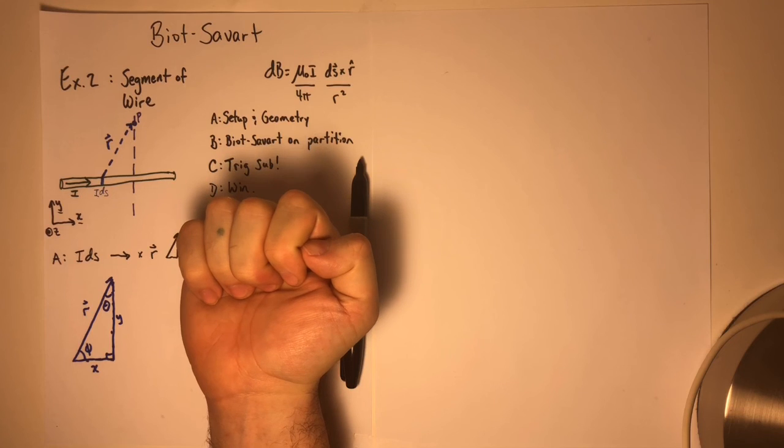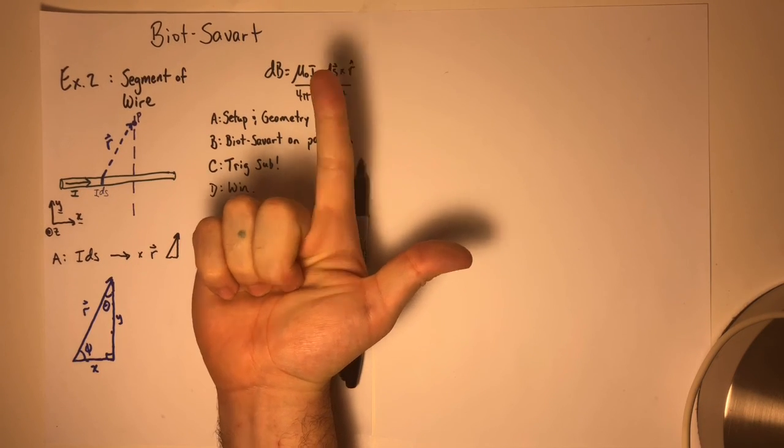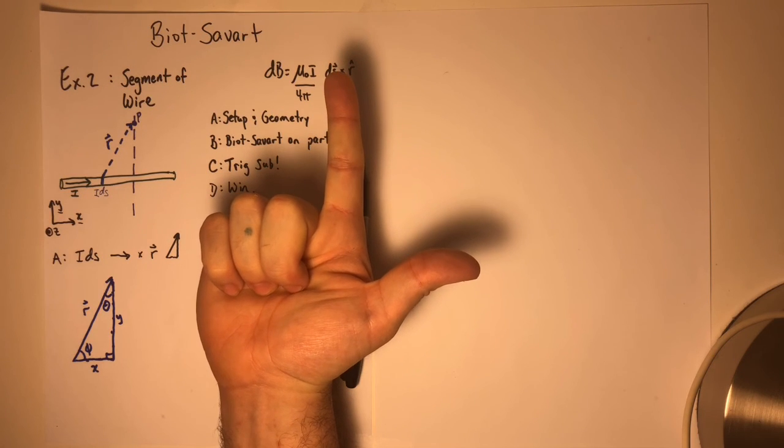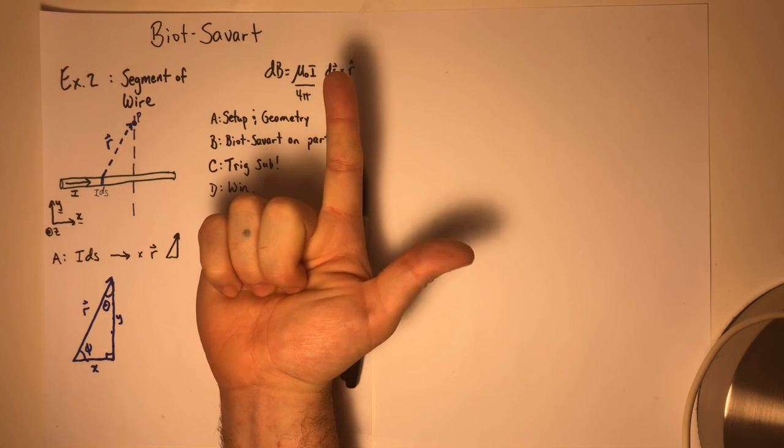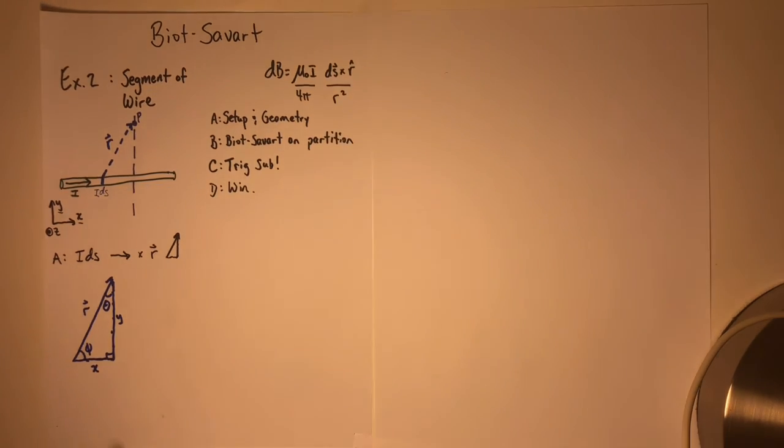The reason that I'm using phi is to show you that when you do the cross product, you're taking your first vector IDS, and you are crossing it into the second vector R. And so what you want is the angle between those two things. That means that we want the sine of phi.